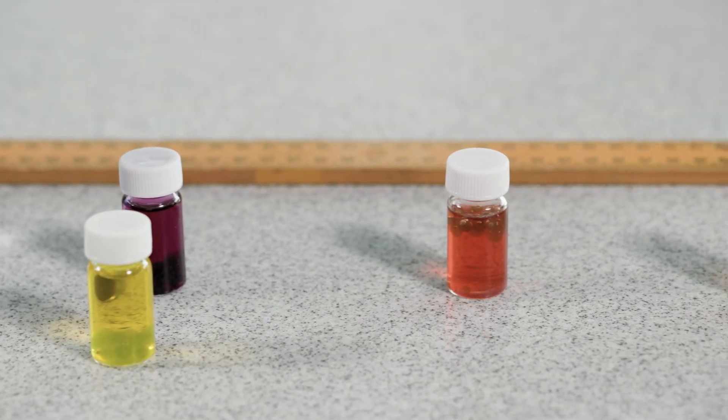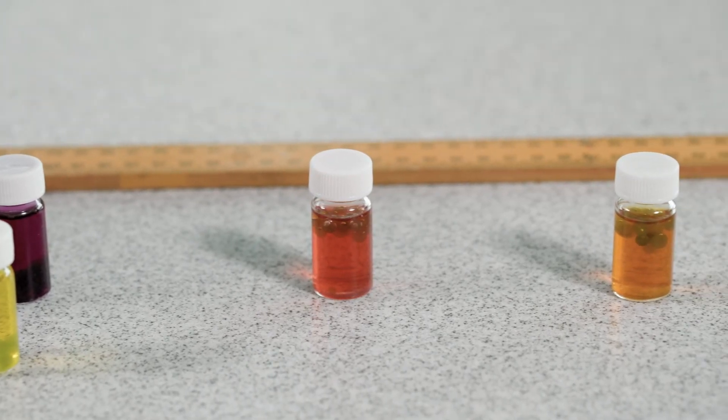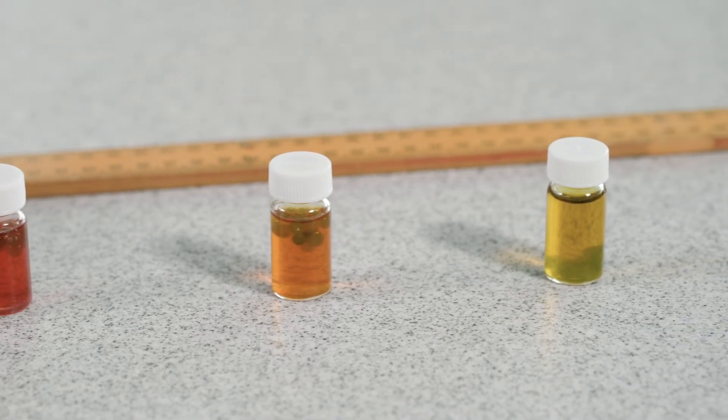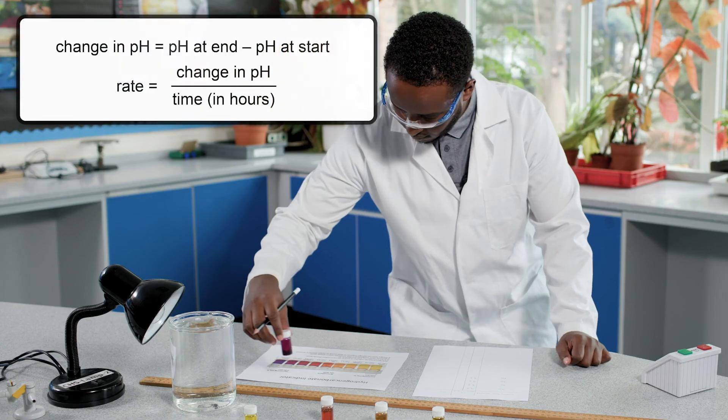Record the pH of the solution in your bottles in a suitable table. For each bottle, calculate the change in pH per hour using the equation shown. Add these calculations to your table.